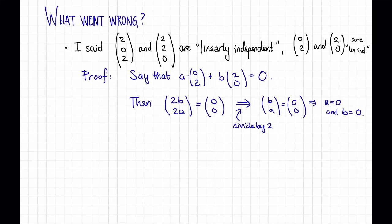So say that, for example, a times the vector (0, 2) plus b times the vector (2, 0) is equal to 0. Then we conclude that (2b, 2a) is equal to the vector (0, 0), which if we divide both sides by 2, implies that (b, a) is equal to the vector (0, 0), which implies that a equals 0 and b equals 0, hence this was not actually a non-trivial linear combination. Therefore these vectors are linearly independent.